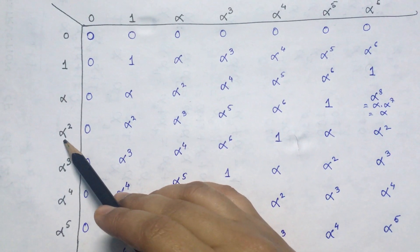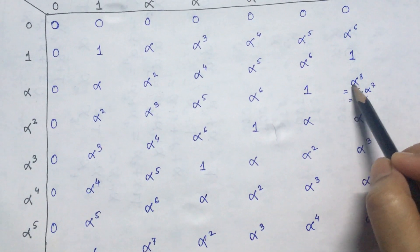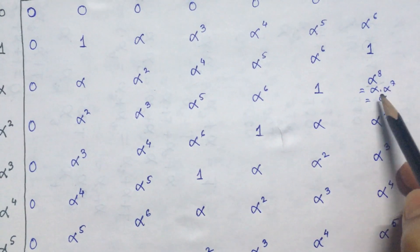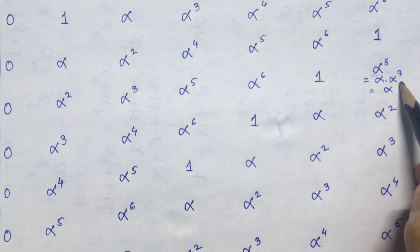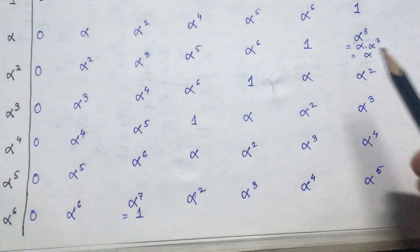Similarly, if we take a look at this element alpha square into alpha to the power 6, that is alpha to the power 8, which is alpha into alpha to the power 7. So, since alpha to the power 7 is 1, we get alpha over here.